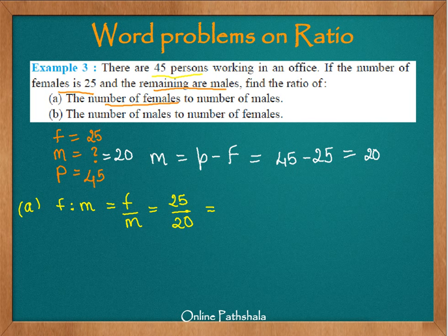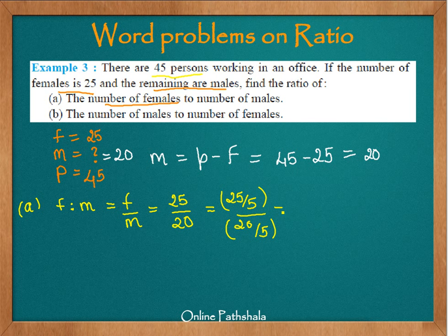We need to reduce this ratio to its smallest form, so we divide the numerator and the denominator by a common factor. Observing both numbers, we can divide by 5: 25 divided by 5 gives us 5, and 20 divided by 5 gives us 4. Therefore the lowest form of this ratio is 5 is to 4 — the number of females to the number of males is 5 is to 4.